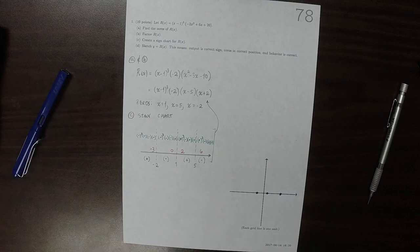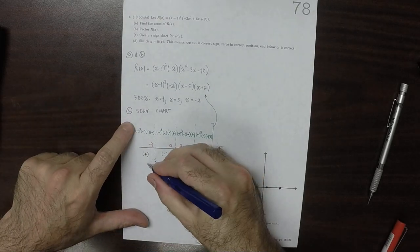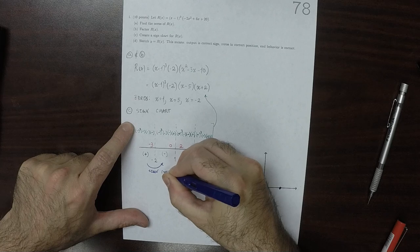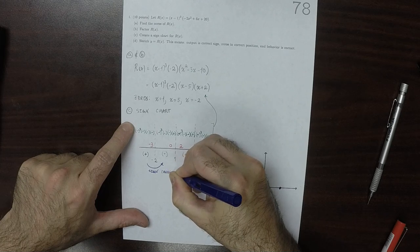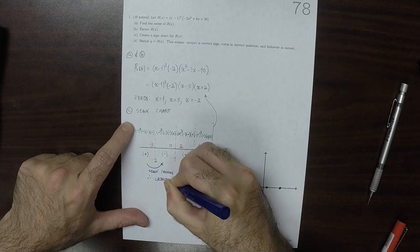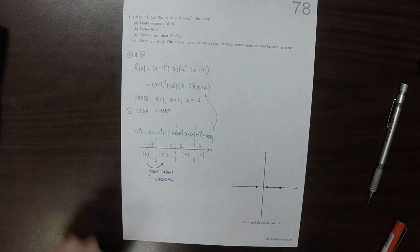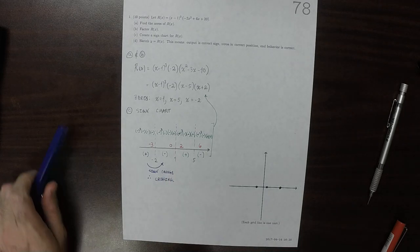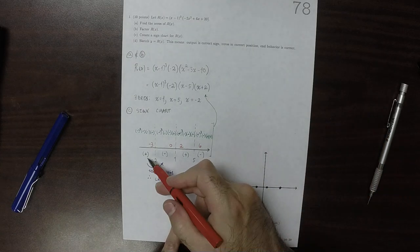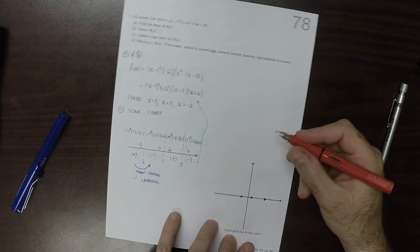And notice that at every zero, every zero, there's a sign change, and therefore that's a crossing, and that's true of all of them, positive to negative, negative to positive, positive to negative. If the sign didn't change at a zero, then that would not be a crossing, that would be a bounce. Okay, so we start high, and we end low, and we cross at every zero.